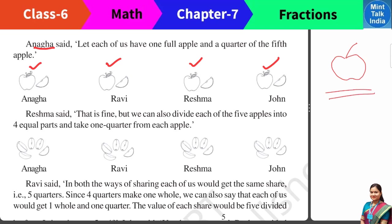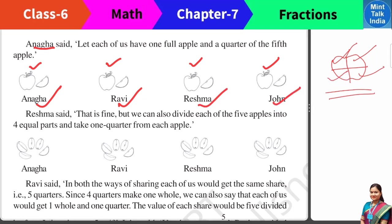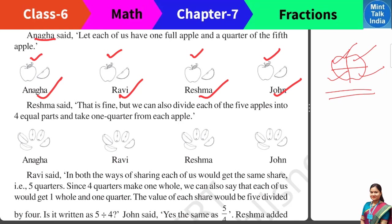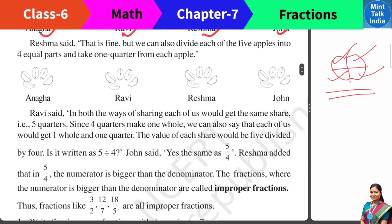After that, the 5th apple will be saved; they will divide it into 4 equal parts. So one portion will be Anagha's, the second part will be Ravi's, the third part Reshma's, and the fourth part John's. We divide the 4 apples in this way. Total portions: how many children have 1 apple each? They have made total 4 quarters, and 4 quarters make 1 whole.